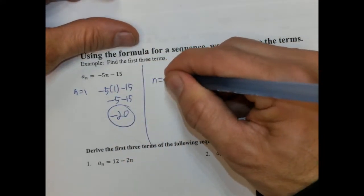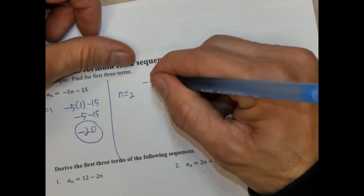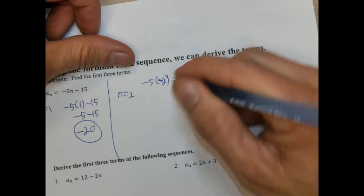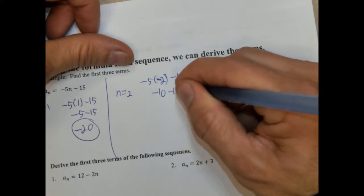And then when n is 2, we're going to have negative 5 times 2 minus 15. So it would be negative 10 minus 15, which is negative 25.